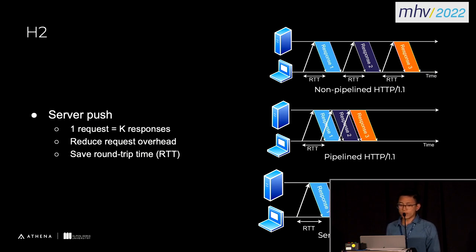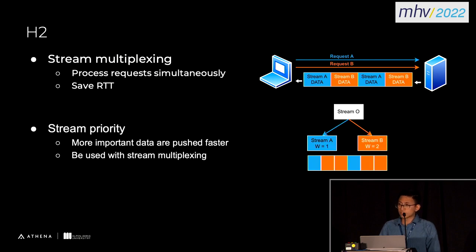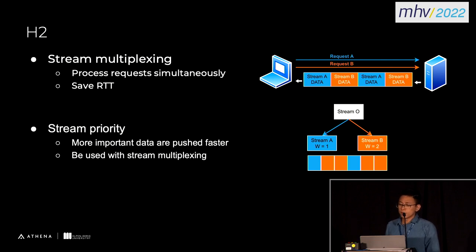With server push we can reduce request overhead and save time. In terms of the multiplexing feature, we can process requests at the same time and also save RTT. The third feature is stream priority, where the client can indicate that more important data should be pushed faster from the server. This feature is normally used together with stream multiplexing. For example, stream A has a weight of 1 and stream B has a weight of 2, so stream B will be pushed 2 times faster than stream A.